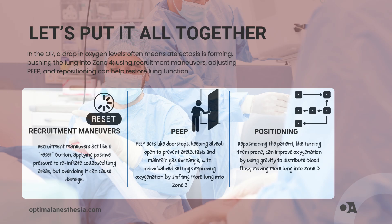Let's say you're the maintenance crew for this building — how do you keep things working smoothly? Number one: recruitment maneuvers, a good old-fashioned reset. Imagine hitting a reset button that re-inflates the entire building. That's what recruitment maneuvers do — applying positive pressure to pop open the collapsed areas of the lung. Just be gentle, though, because if you overdo it, you might cause damage.